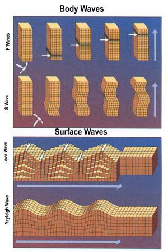Some examples of spheroidal oscillations are the 'breathing' mode 0S0, which involves an expansion and contraction of the whole Earth with a period of about 20 minutes, and the 'rugby' mode 0S2, which involves expansions along two alternating directions with a period of about 54 minutes. The mode 0S1 does not exist because it would require a change in the center of gravity requiring an external force. The fundamental toroidal mode 0T1 represents changes in Earth's rotation rate, while 0T2 describes a twisting of the northern and southern hemispheres relative to each other with a period of about 44 minutes. The first observations of free oscillations of the Earth were made during the great 1960 earthquake in Chile.